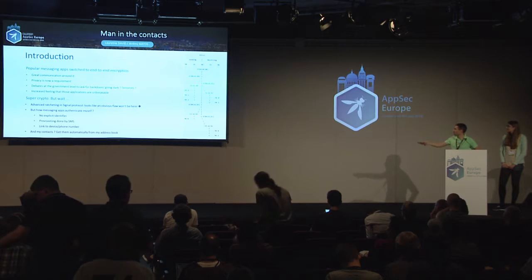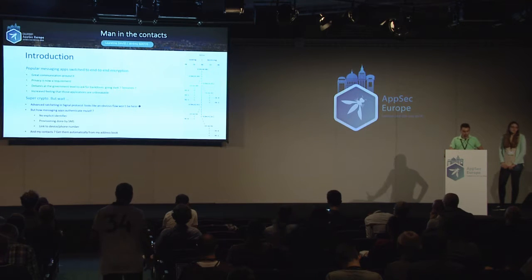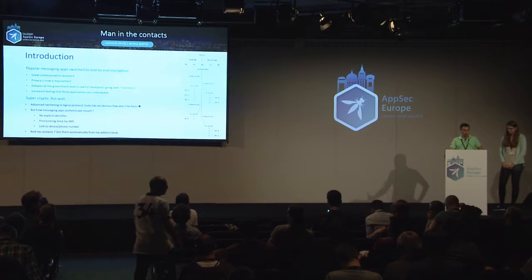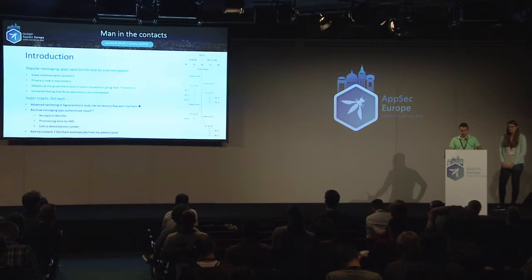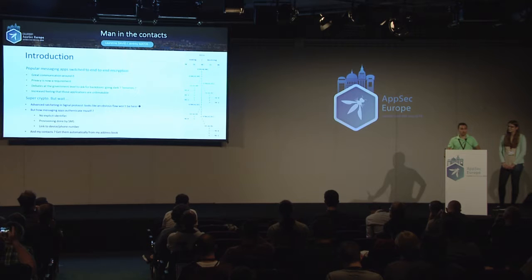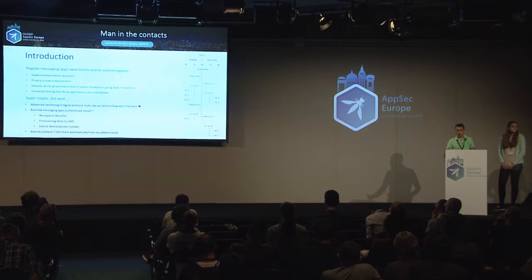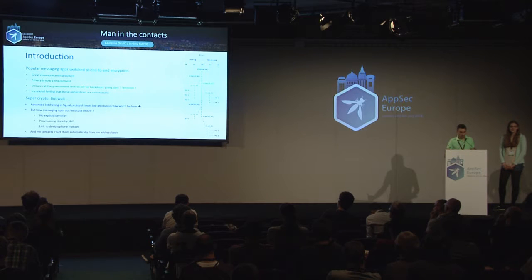If you want to have a look at the crypto — here it's the advanced ratcheting in the Signal protocol — well, cryptographers have done their work, so there won't be an obvious flaw there. But there is still a chill here. There's this big crypto, but you never really authenticate with a strong identity. You don't give any particular ID. What happens is there's a provisioning via SMS at installation time, then it connects to your contact phone number, and then the magic crypto starts. Is this enough?